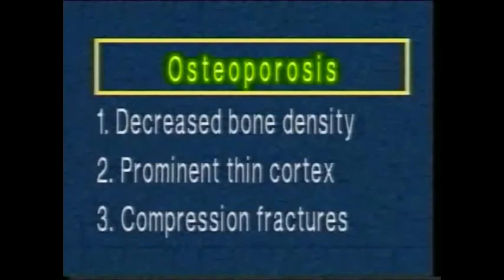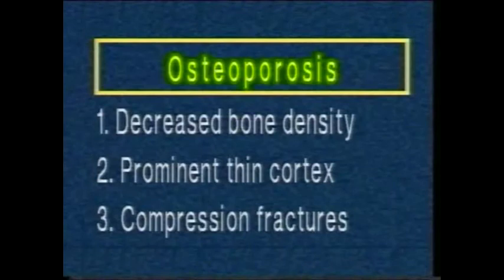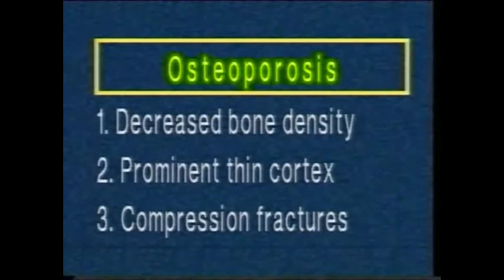The radiological features of osteoporosis are osteopenia, or decrease in the bone density, with loss of trabeculae. There is a relative prominence of the thin cortex, and compression fractures are common.